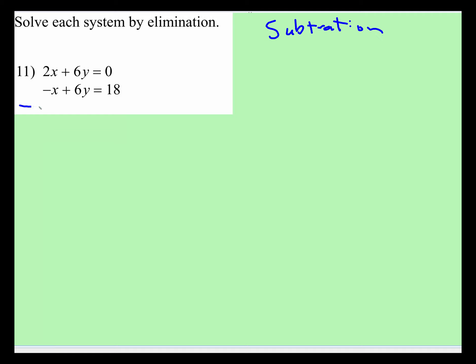If you notice this problem right here, the whole point to elimination is to eliminate one of the variables. We have in both equations a positive 6y, so we can go ahead and subtract this whole row.